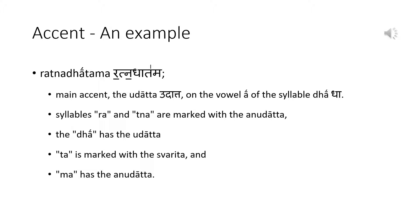As an example, let us take the word ratna-dhā-tama. The main accent or the udātta is on the vowel ā of the syllable dhā. The syllables ra and na are marked as anudātta. The dhā is the udātta, the ta is marked as the svarita — the enclitic svarita — and ma as the anudātta.